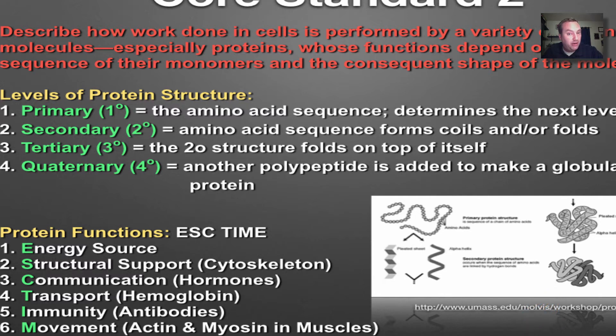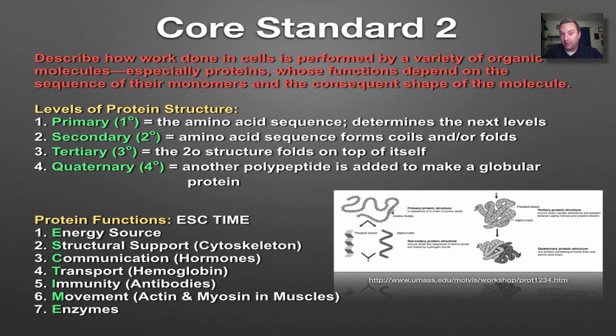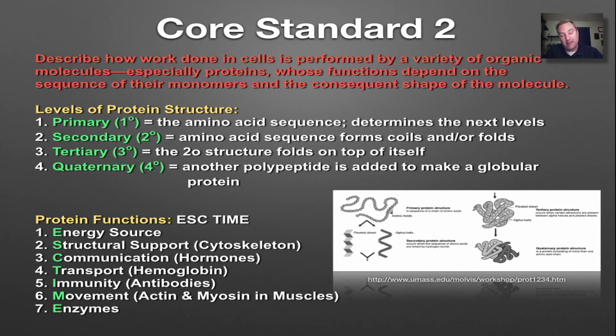The functions of a protein: we use this mnemonic device called ESCAPE TIME, where E stands for energy source, only if carbohydrates and lipids have been used up. The S would be the structural component, like your cytoskeleton, microfilaments, microtubules. The C stands for communication, your chemical messengers or hormones. T for transport. Certain protein molecules like hemoglobin will carry stuff. Hemoglobin carries oxygen. I for immunity. Your antibodies help fend off disease. M for movement. Your muscles are made up of protein fibers, specifically actin and myosin, and they help your muscles contract. And then finally, the most important function of any biomolecule, and especially a protein, is an enzyme, because enzymes control the rate of chemical reactions. Everything occurs in your body through chemistry.